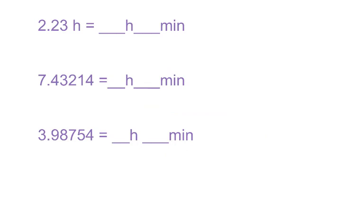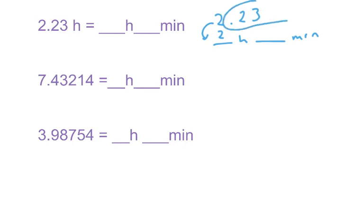Before we start, we need to talk about when you have time like 2.23 hours but we need hours and minutes. So 2.23 is not 2 hours and 23 minutes. The 2 is easy because it is 2 hours. But you're going to take whatever is behind the decimal times 60. On your calculator, type .23 times 60, and you get 13.8 minutes, which rounds to 14. So that's 2 hours and 14 minutes.